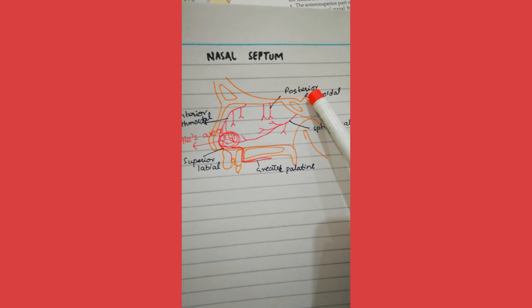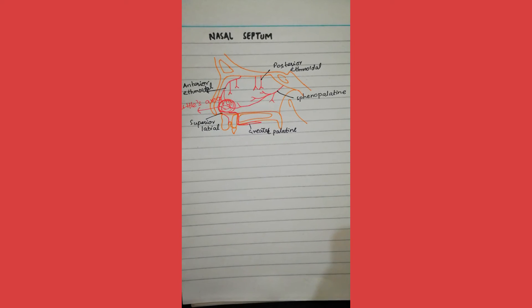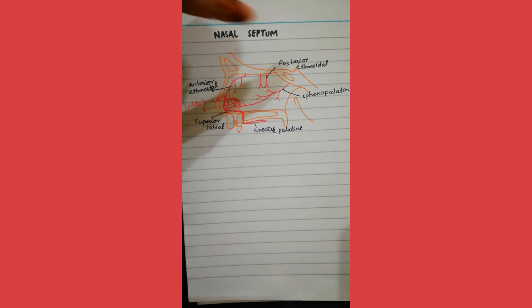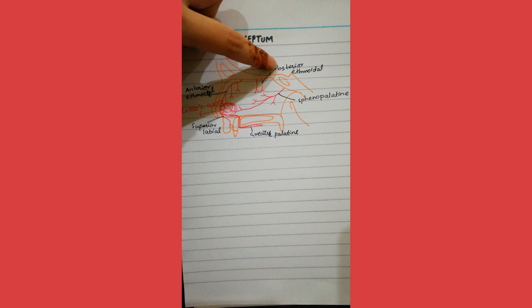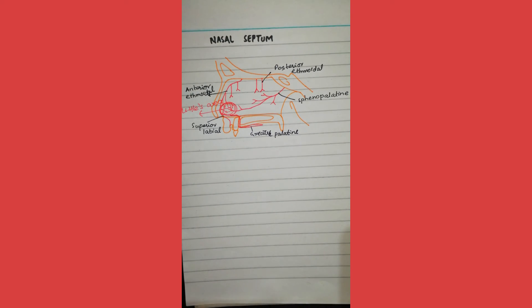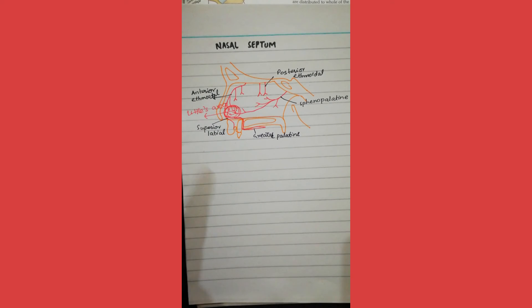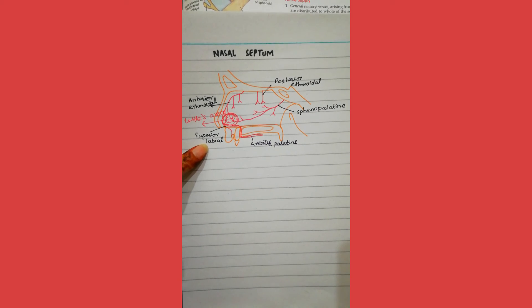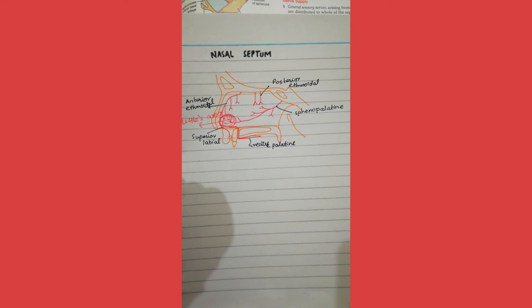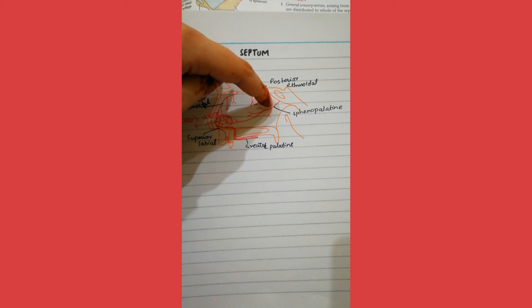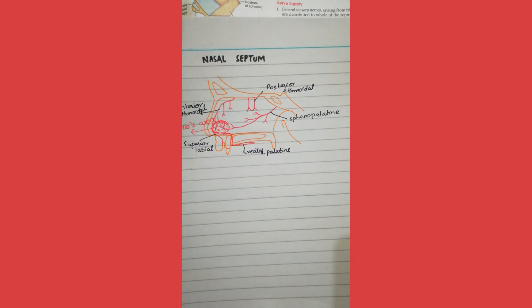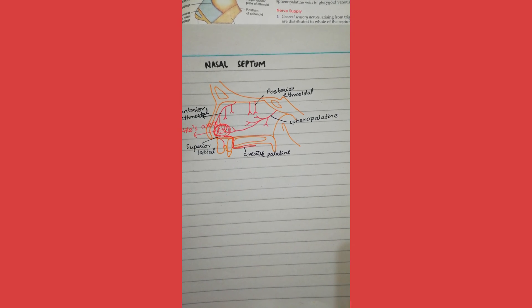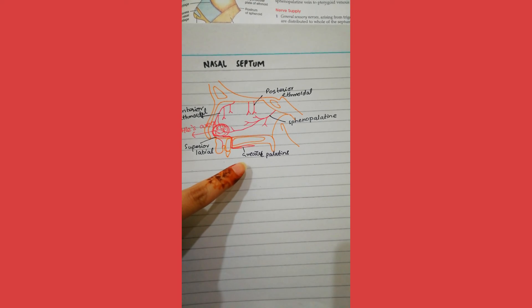For a general review of the arterial supply of the nasal septum: the anterior superior part is supplied by the anterior and posterior ethmoidal arteries. The anterior inferior part is supplied by the superior labial branch of facial artery. The posterior superior part is supplied by sphenopalatine artery, while the posterior inferior part is supplied by the branches of greater palatine artery.